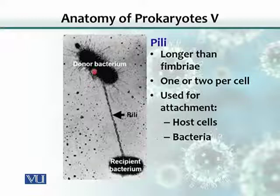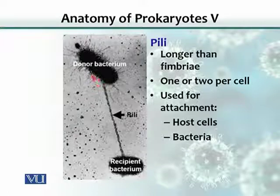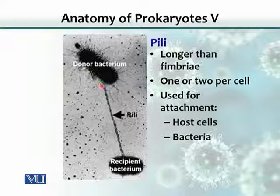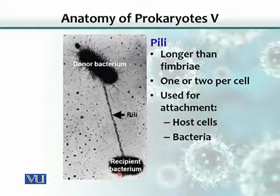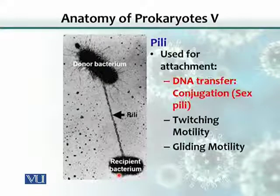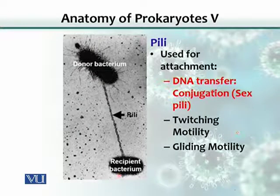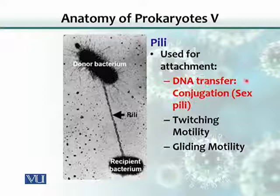In this image of DNA transfer, a donor bacterium extends its pilus to a recipient bacterium and transfers its DNA. It does not inject all of its DNA — just a plasmid containing antibiotic-resistant genes. If the donor bacterium has acquired resistance against an antibiotic, it can transfer this plasmid, making the recipient bacterium resistant as well. Because of this, the pilus is also called a sex pilus.